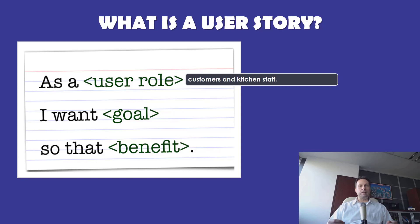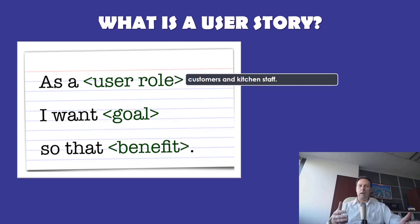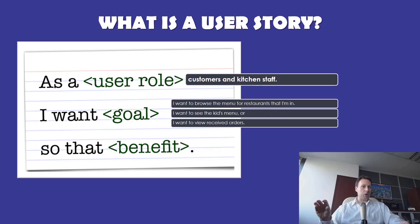The stated requirement is written from the stakeholder's point of view. The second blank signifies the task or function the stakeholder wants to resolve using the product. This is the meat of the requirement and is usually what people think of most when they think of a requirement — it specifies the what. Examples for a restaurant application include: I want to browse the menu for the restaurant that I'm in, I want to see the kids menu, or I want to view received orders.